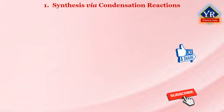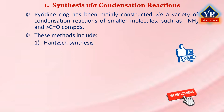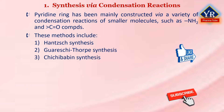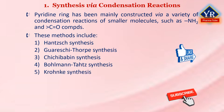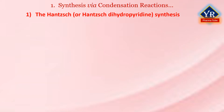Synthesis of pyridine via condensation reactions. Historically, the pyridine ring has been mainly constructed via a variety of condensation reactions of smaller molecules such as amines and carbonyl compounds. These methods include: Number 1, Hansch synthesis; Number 2, Gwaraschi-Tharp synthesis; Number 3, Chichibabin synthesis; Number 4, Bohlmann-Ratz synthesis; and Number 5, Kroenke synthesis.